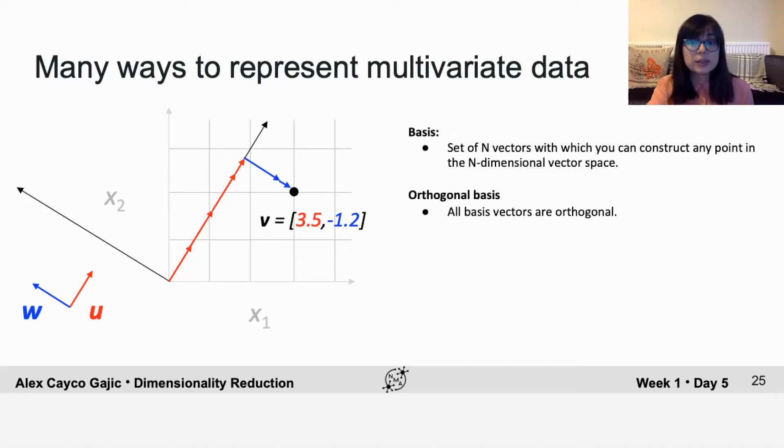These are both examples of orthogonal bases. So in both the standard basis and this rotated basis, all of the basis vectors are orthogonal to each other.